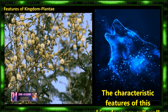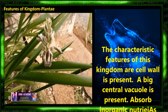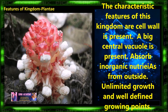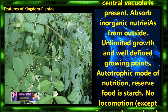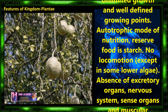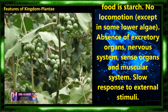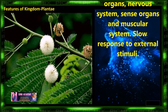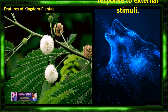Later on, they distinguished the features of kingdom Plantae as follows. In Plantae, the cell wall is present, and a big central vacuole is present. They absorb inorganic nutrients from outside, and unlimited growth with well-defined growing points is observed. Kingdom Plantae undergoes autotrophic mode of nutrition and reserves food in the form of starch. There is no locomotion except in some lower algae, and there is an absence of excretory organs, nerve system, sense organs and muscular system. They perform slow responses to external stimuli.